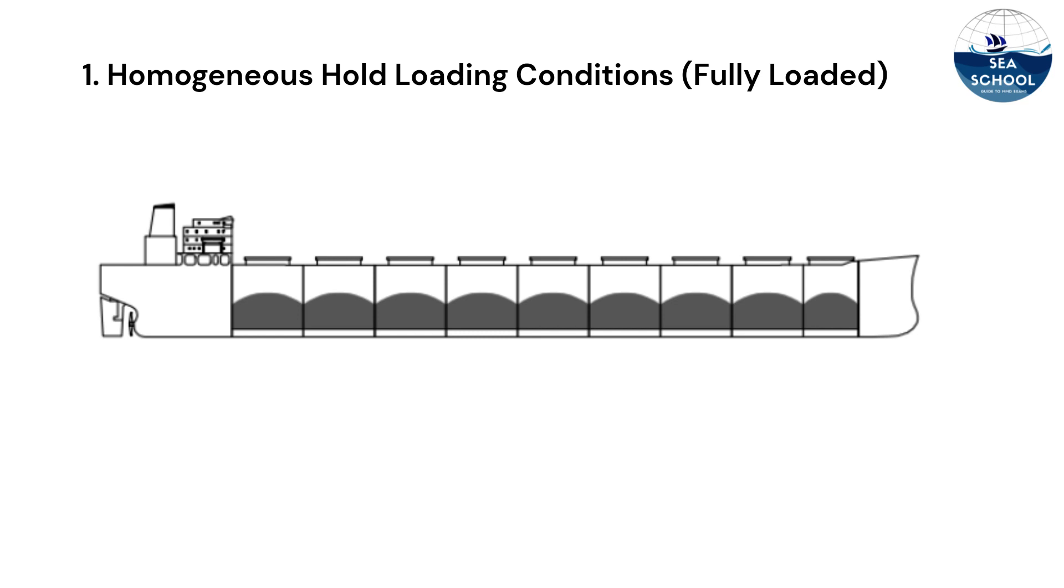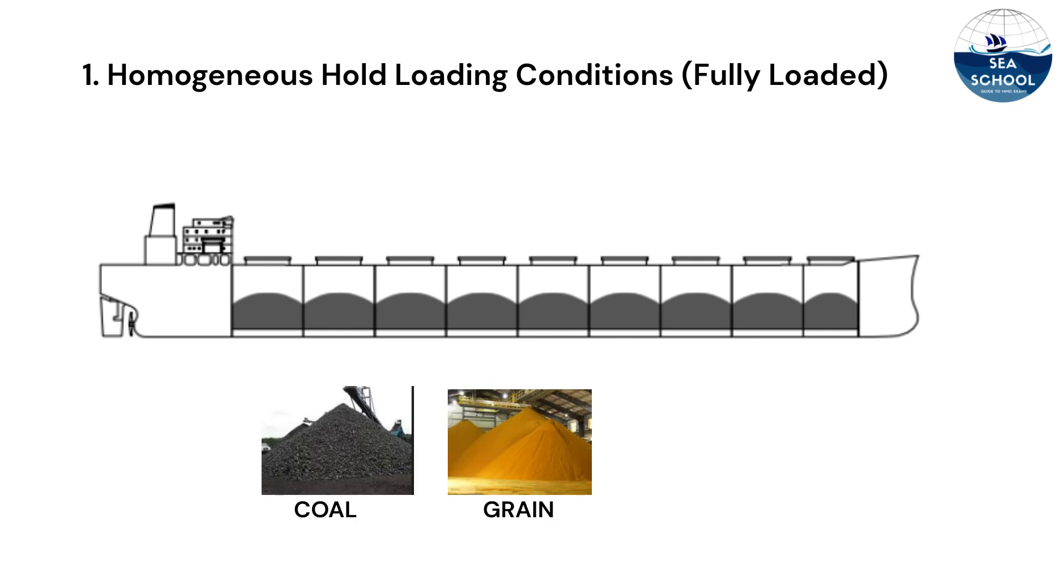This loading distribution, in general, is permitted for all bulk carriers and is usually adopted for the carriage of low-density cargos, such as coal and grain. However, high-density cargos such as iron ore may be carried homogeneously.